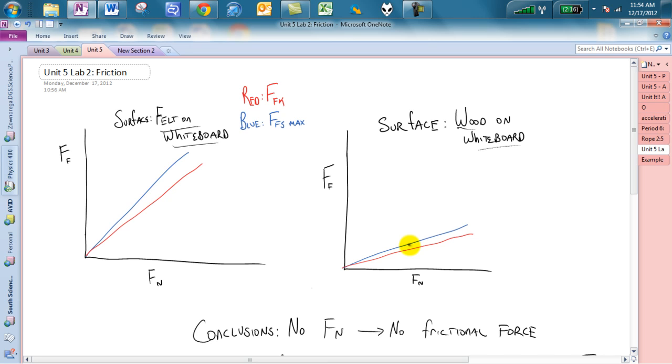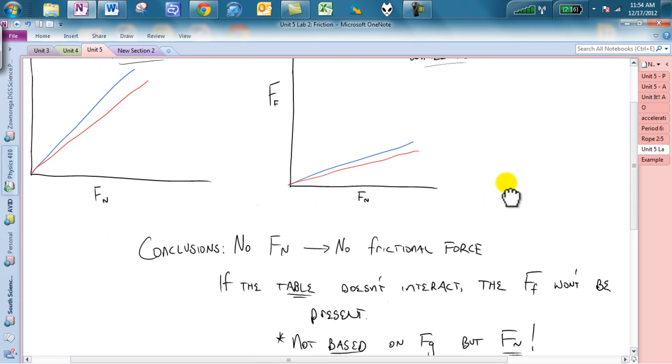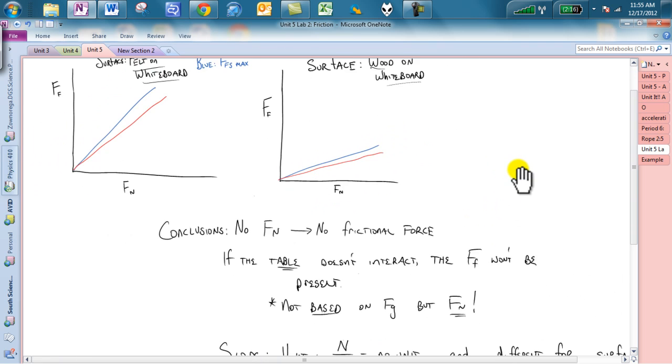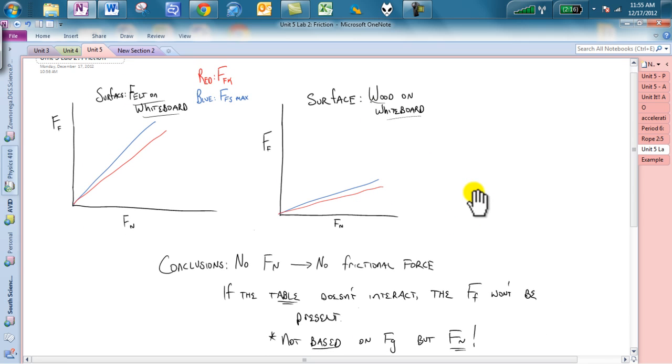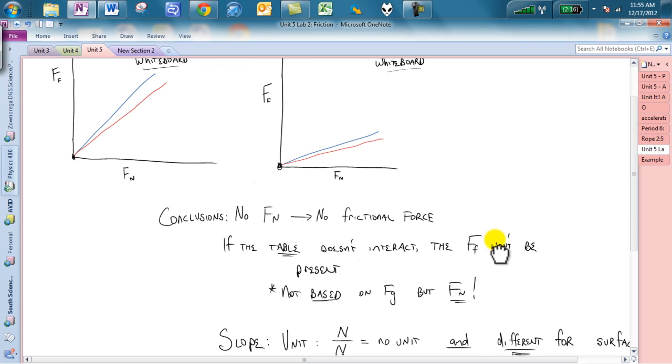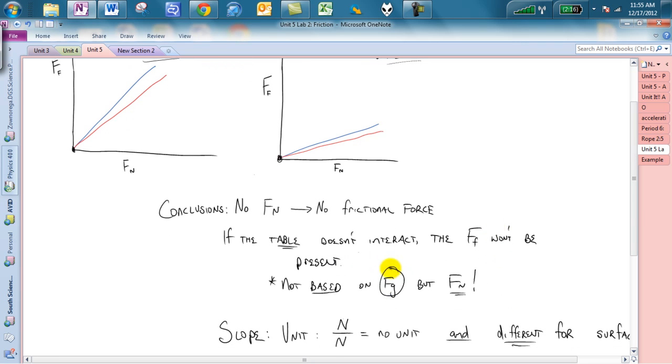So, one of the biggest conclusions you could get out of this is taking a look at the y-intercept. Notice that when you have zero Fn, zero Fn, you should have no frictional force. So, if the table is not interacting, the frictional force will not be present.